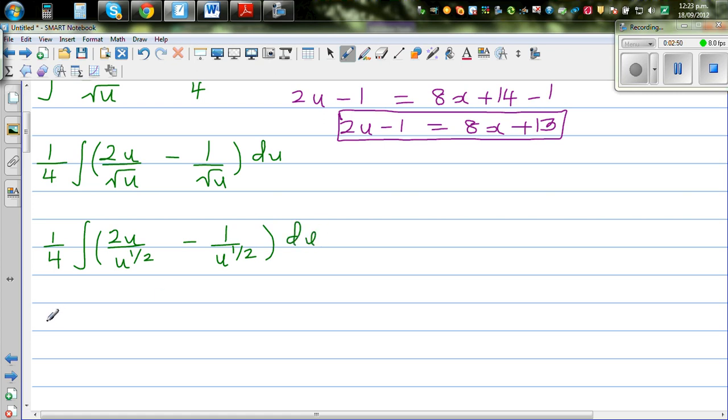So this is 2u to the power 1 minus half. So this becomes 2u to the power 1 minus 1 half minus u to the power negative 1 half du.